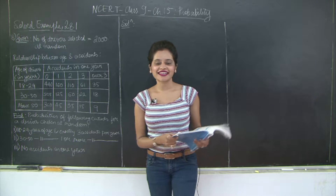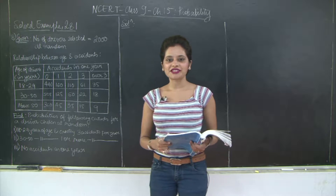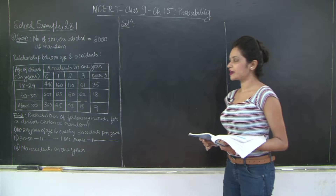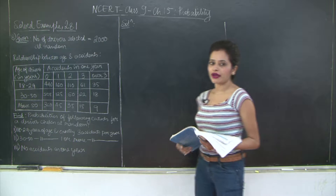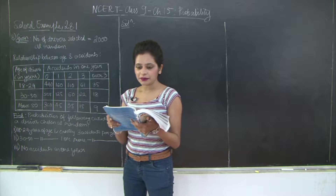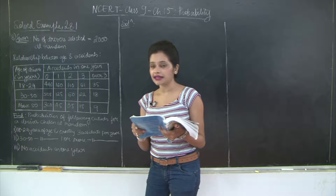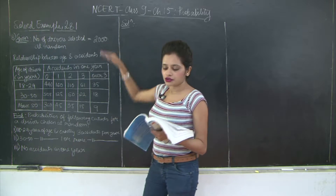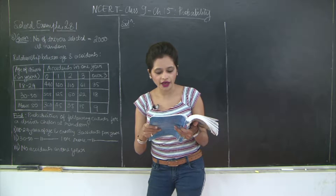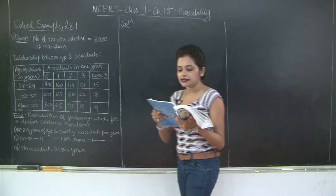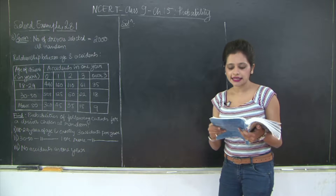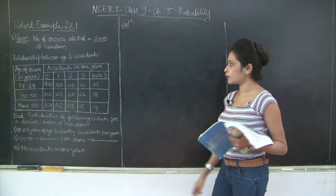Hello students, welcome back. Let us continue with Chapter 15, Probability, the solved example on page 281, question number 8. I'll read out the question for you and then we will relate it to what is written on the board. An insurance company selected 2000 drivers at random in a particular city to find a relationship between age and accidents, and the data obtained is given in the following table.